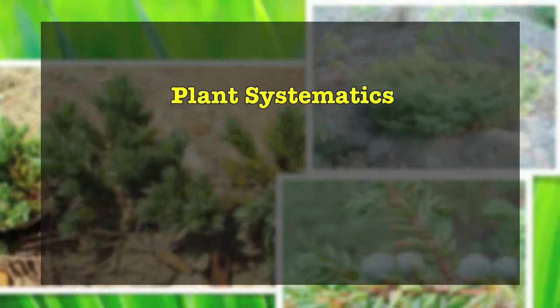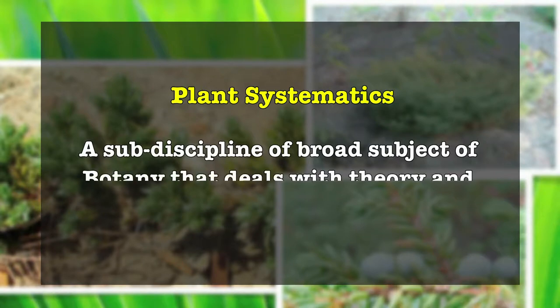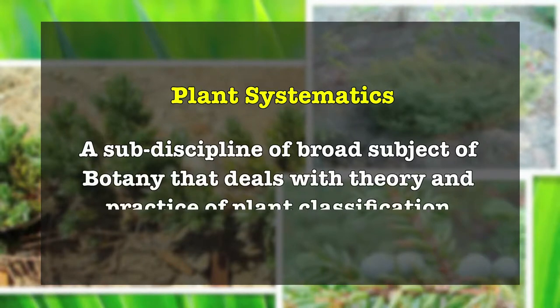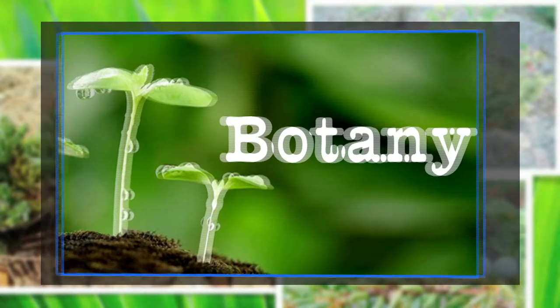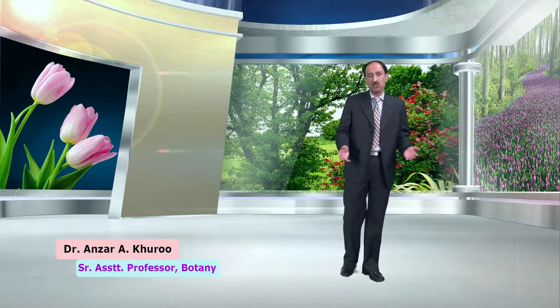Dear students, welcome to the MOOCs — Massive Open Online Courses. Today we will be discussing the MOOC course on Plant Systematics. Plant Systematics is a sub-discipline of the broad subject of botany that deals with the theory and practice of plant classification. It is one of the basic subjects of botany. Historically, scientists have classified plants using different characters, but in recent times most classifications are based on evolutionary history.